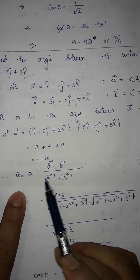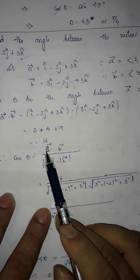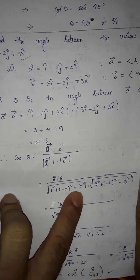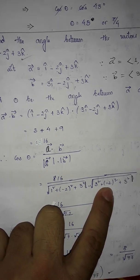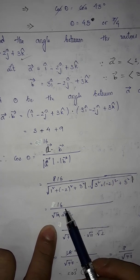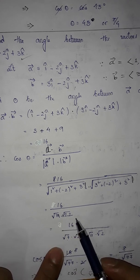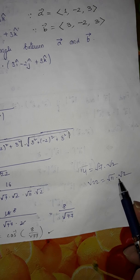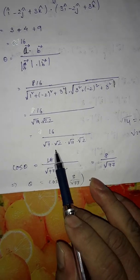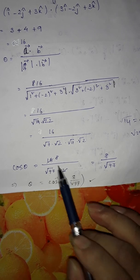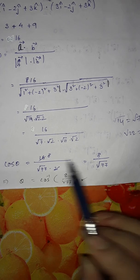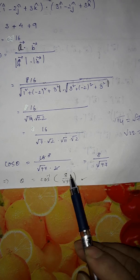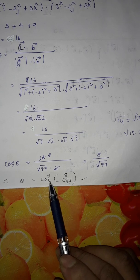Now use the formula: cos θ = a·b divided by magnitude of a times magnitude of b. The value of a·b is 16. Magnitude of a is √(1² + (−2)² + 3²) and magnitude of b is √(3² + (−2)² + 3²). Simplifying, we get 16 divided by √14 times √22. Write √14 as √7·√2 and √22 as √11·√2. So √2·√2 = 2, and 16/2 = 8. Therefore cos θ = 8/√77, since √7·√11 = √77. So θ = cos⁻¹(8/√77).